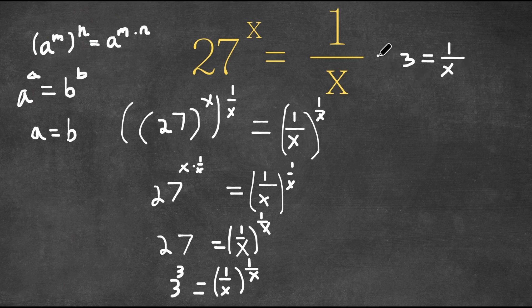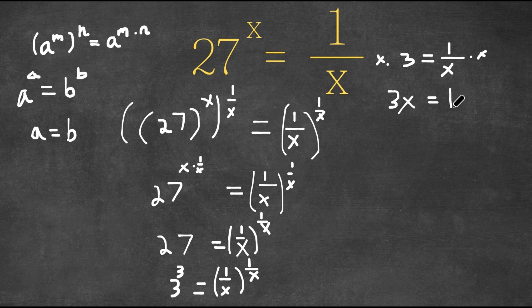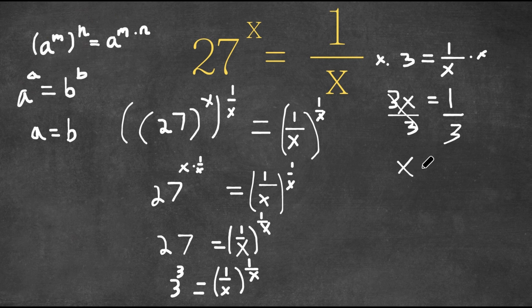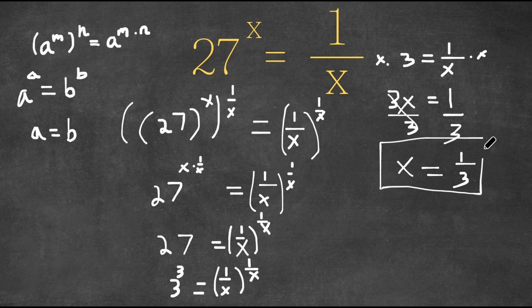Now if we multiply both sides by x, we get 3x is equal to 1. And if we divide both sides by 3, we get x is equal to 1 over 3. So this is our answer.